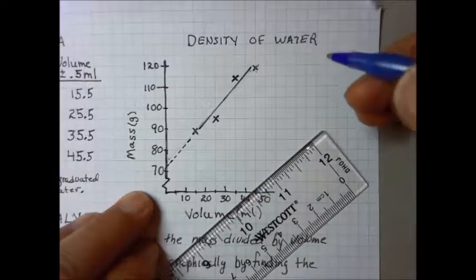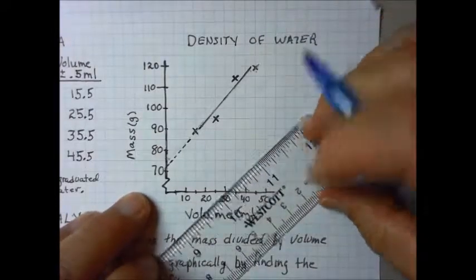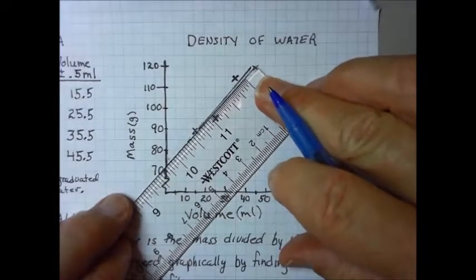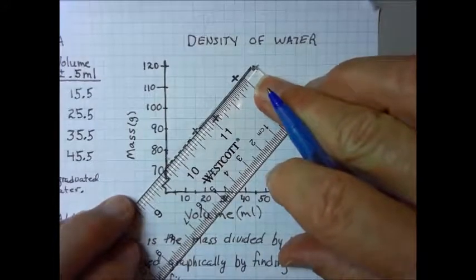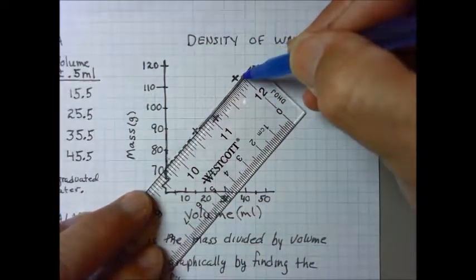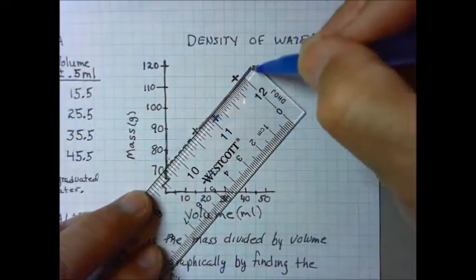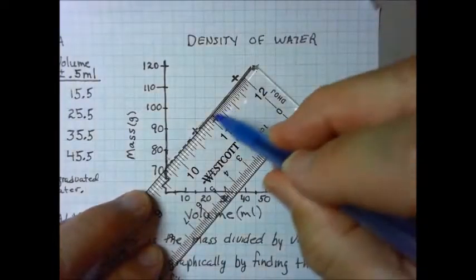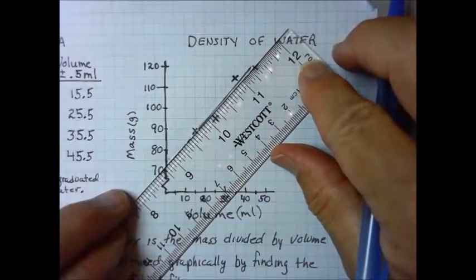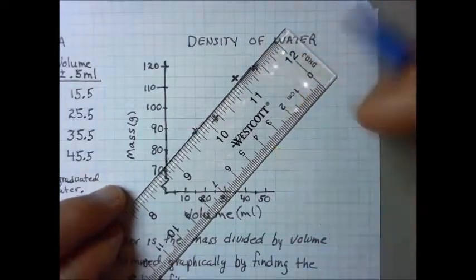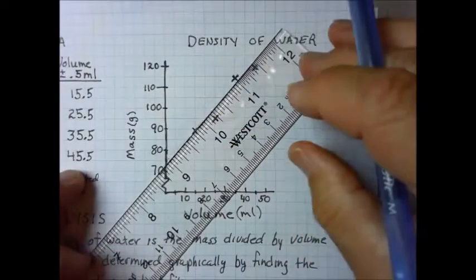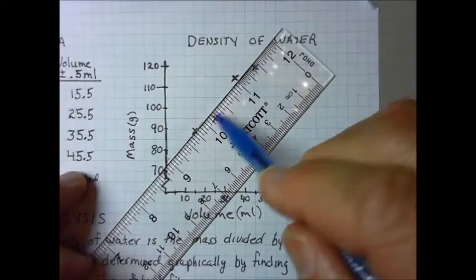That's not what a line of best fit is. A line of best fit is a line that comes as close as possible to as many of your data points as possible. And so you're going to likely have points that are above and below the line, and you're going to try to eyeball this and get that line to come as close as possible. I like to use a transparent ruler so I can actually see the data points underneath my ruler.